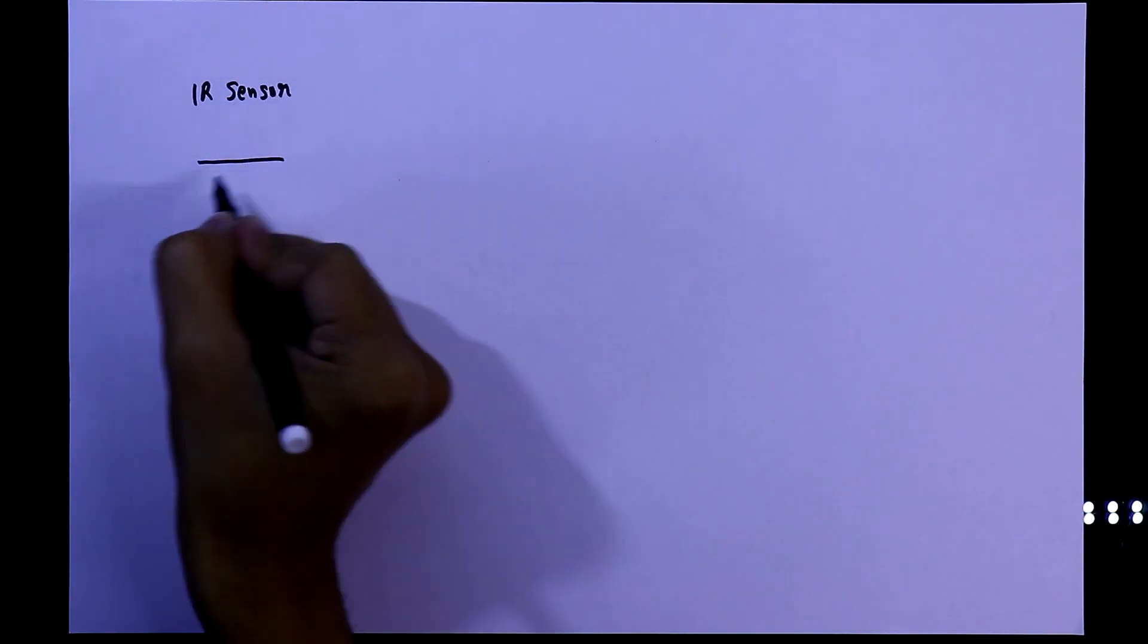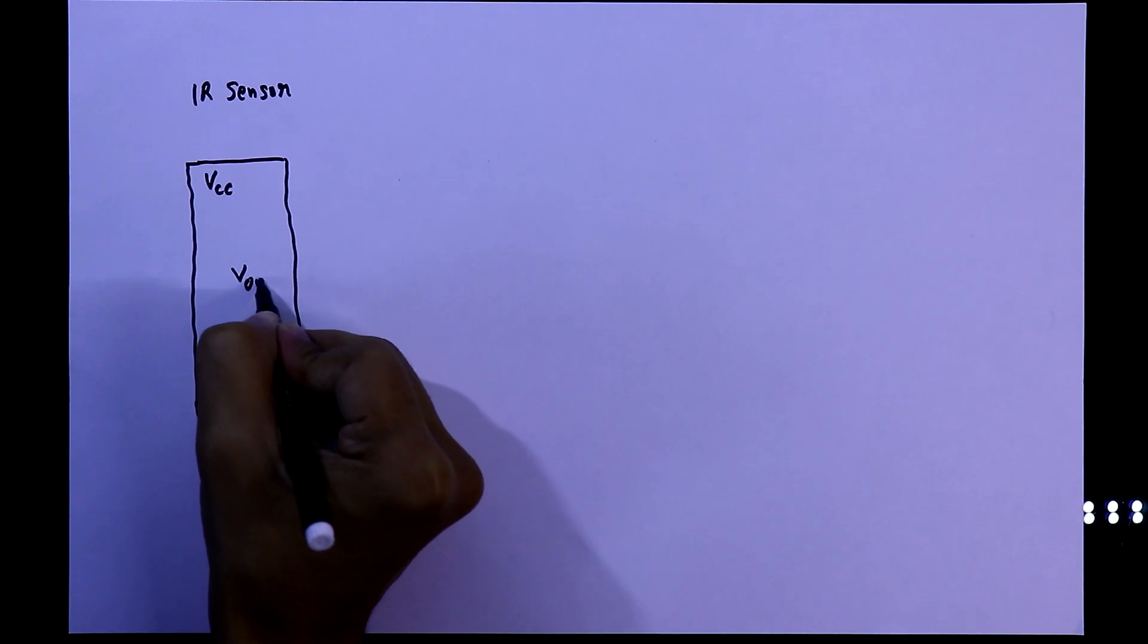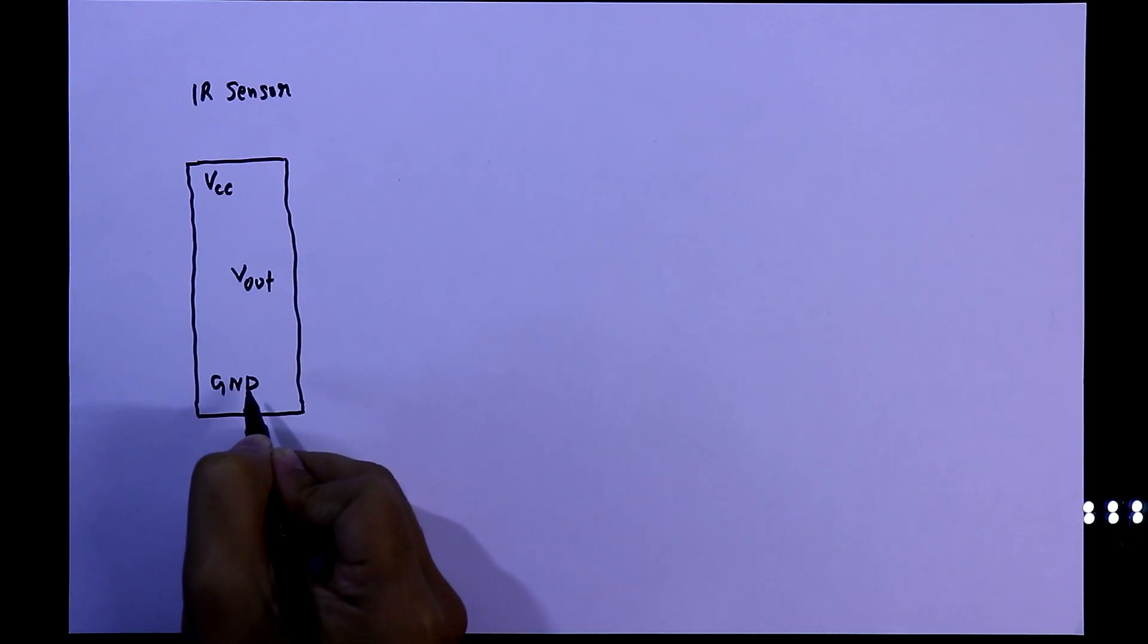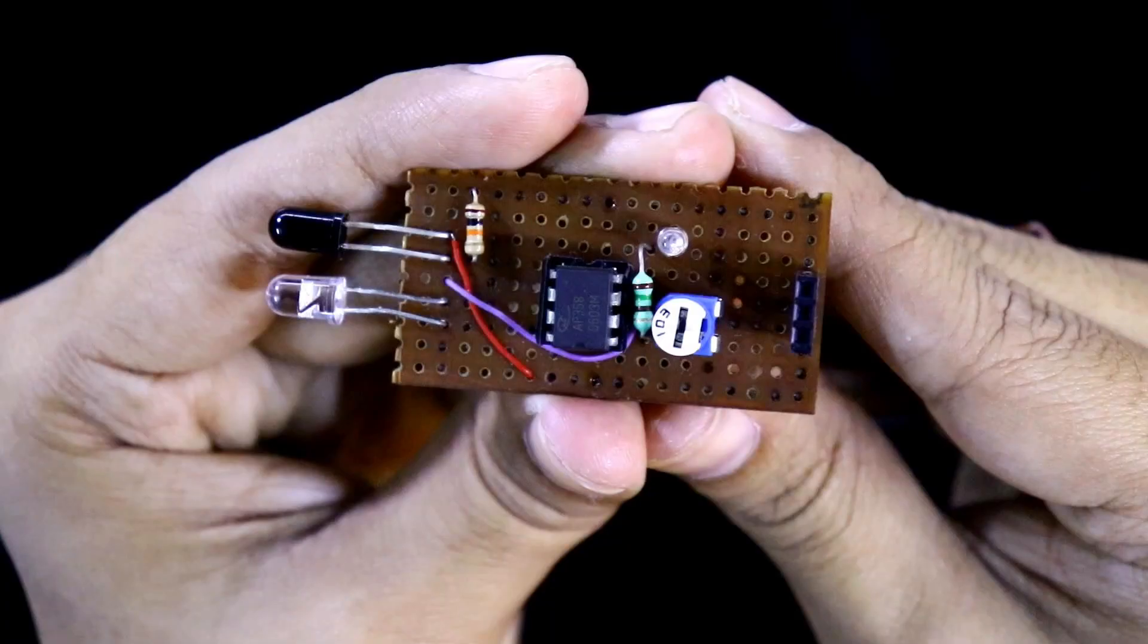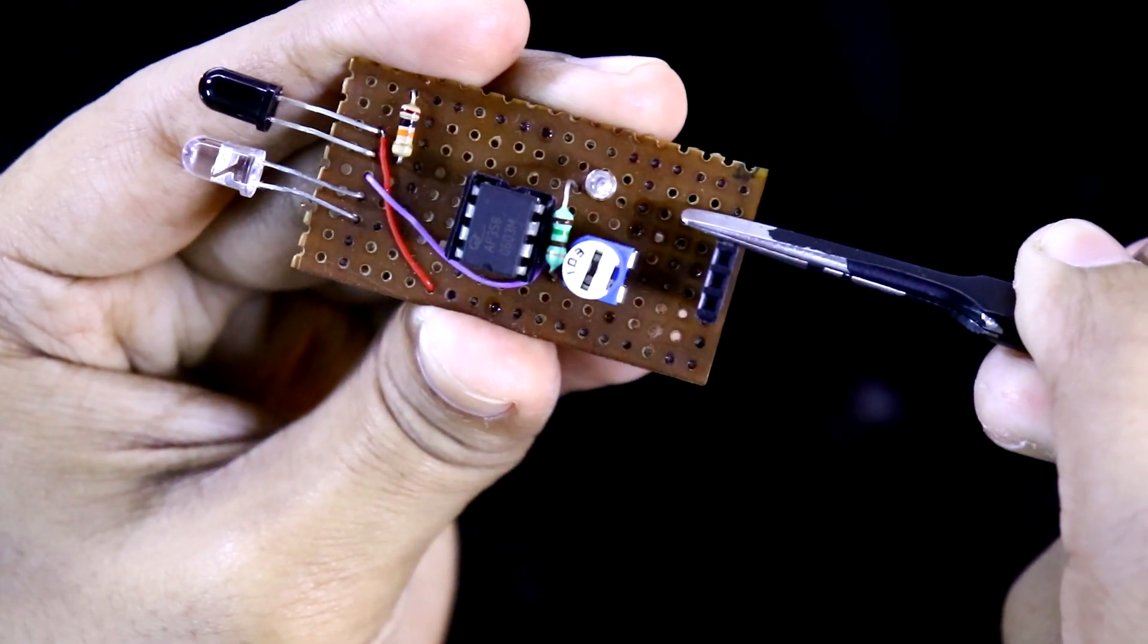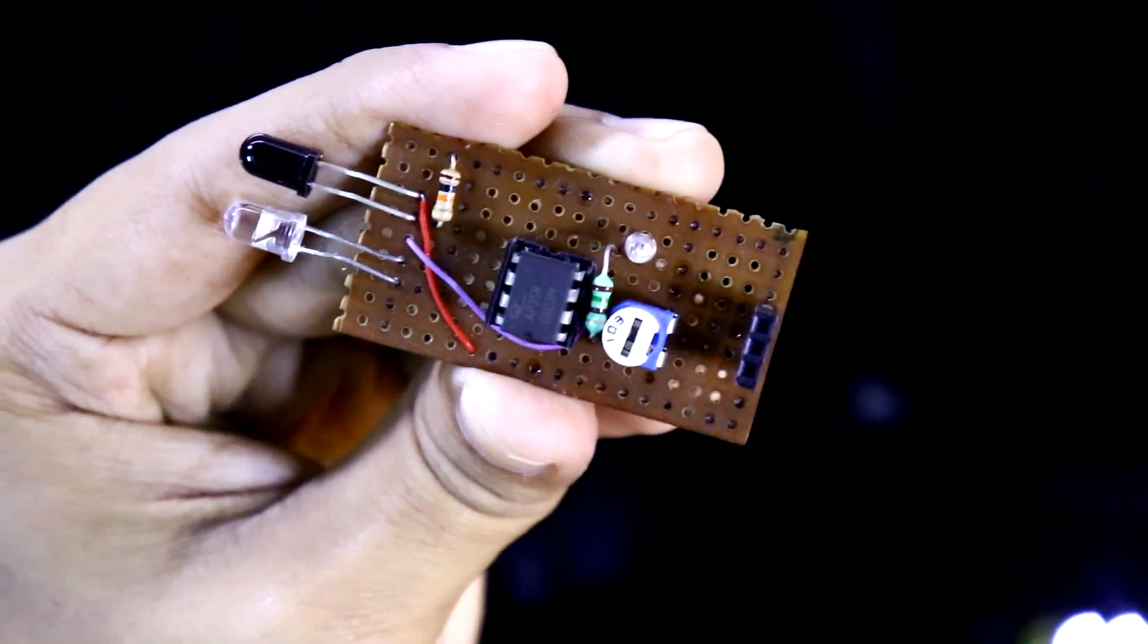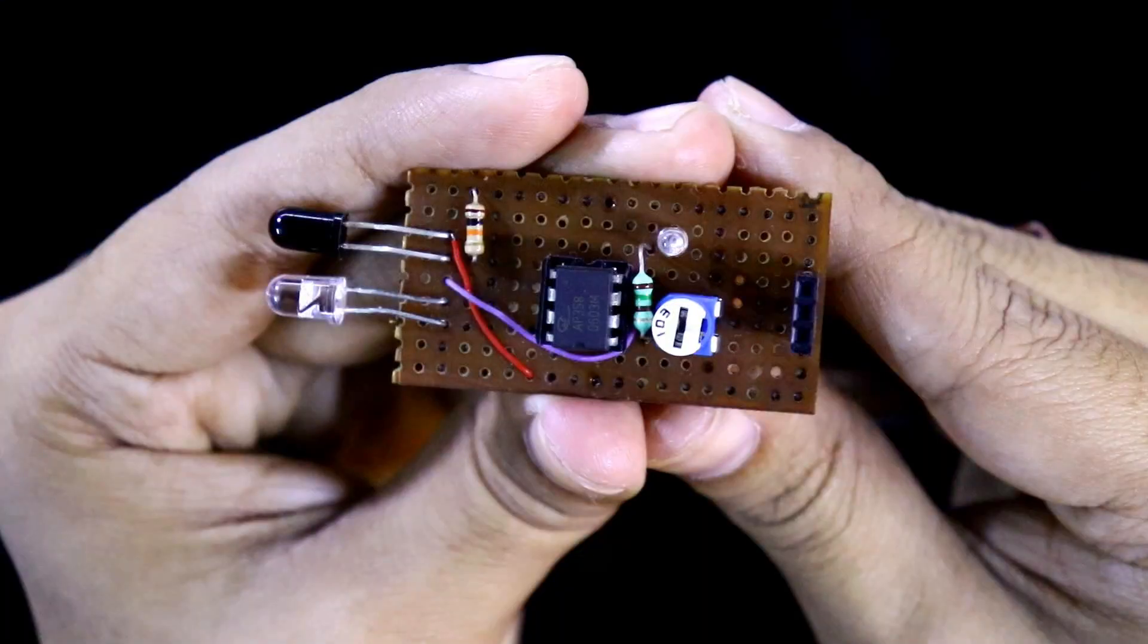For this we need an IR sensor. It has 3 pins: VCC, Vout, and ground. This is the homemade IR sensor module. The left pin is positive, the rightmost pin is negative, and the middle pin is Vout. I already uploaded a video on this, link in the description below.